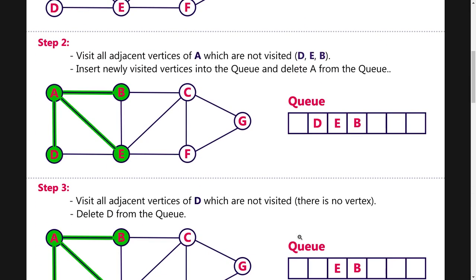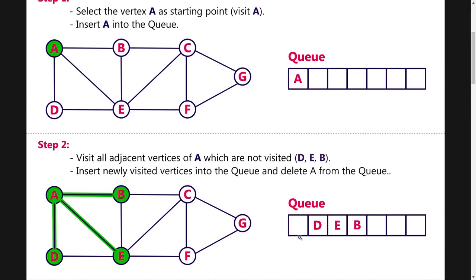Second step: after choosing node A, you have to find the nodes adjacent to A that are unvisited. The nodes connected to A are B, E, and D — these 3 nodes are non-visited nodes, so I am inserting them into the queue. We visit all adjacent vertices of A which are non-visited, inserting D, E, and B, which have now been visited. Then we delete A from the queue.